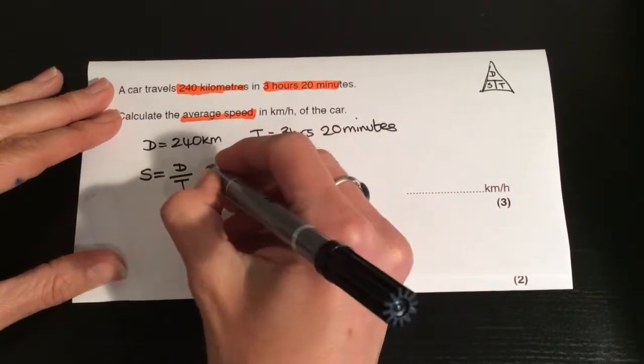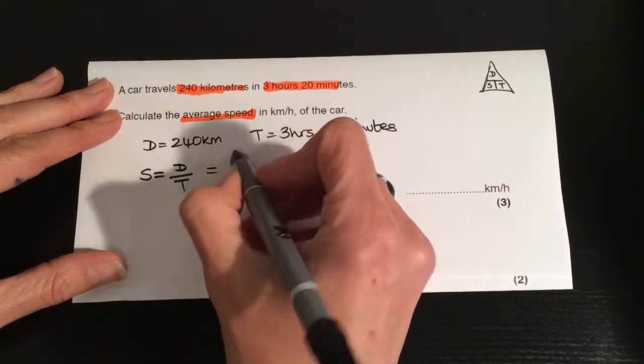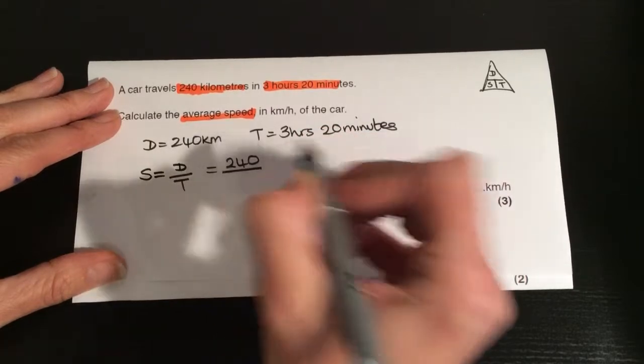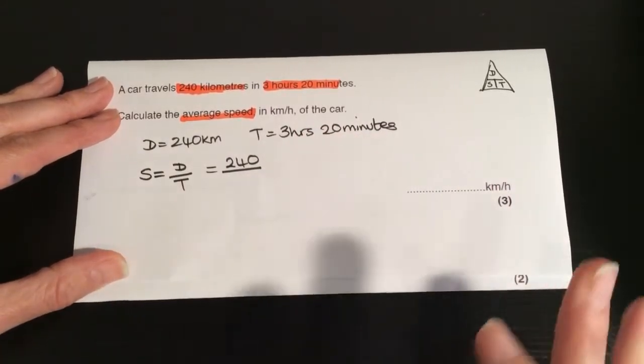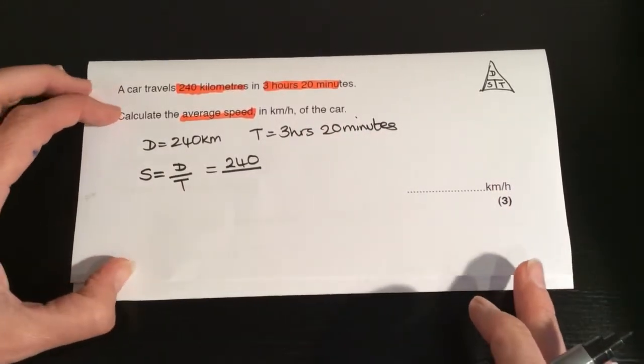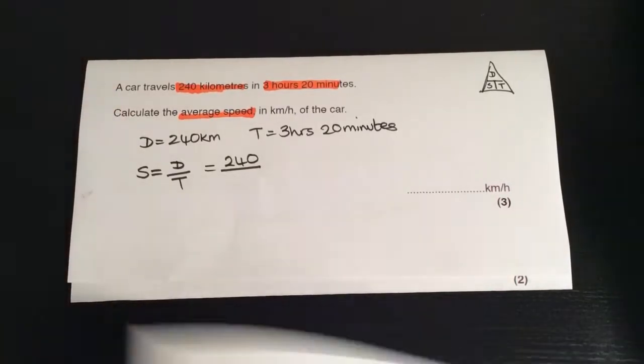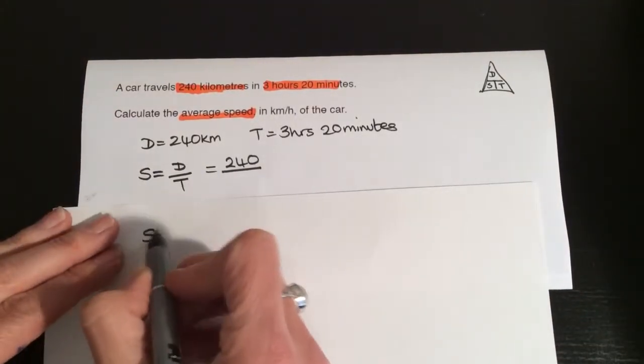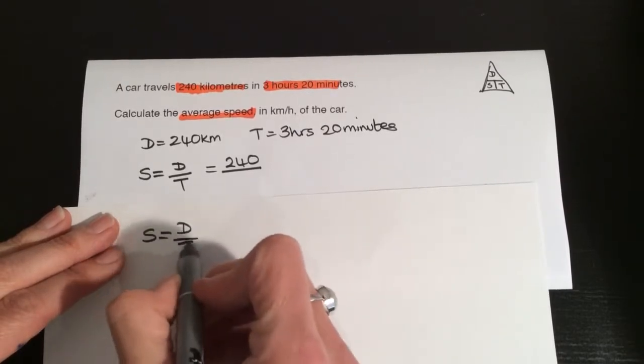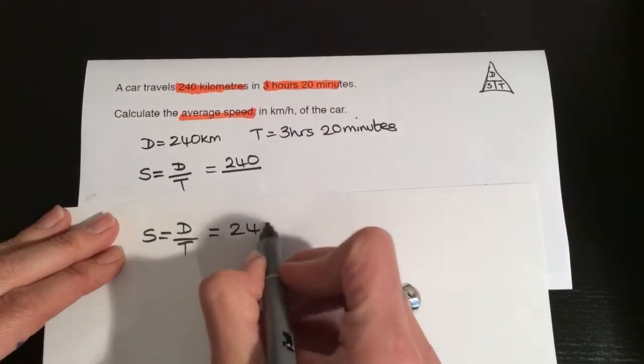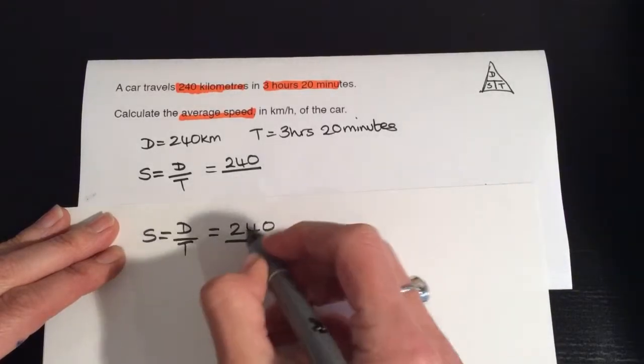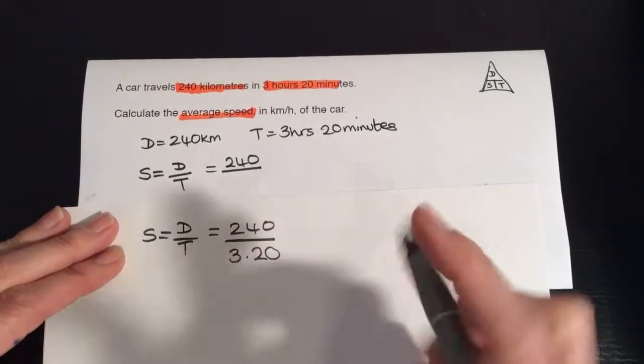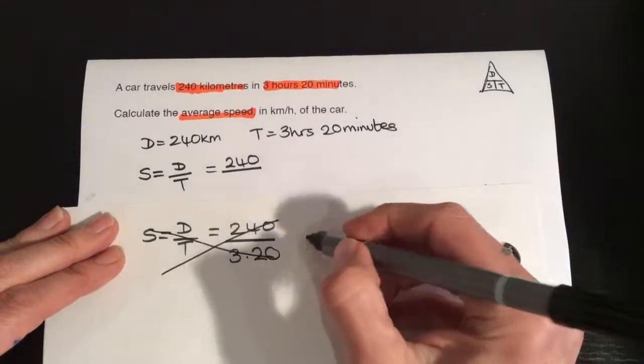Now if we start to put this in, distance is 240. Now this is where some pupils fall down. Let me show you what they do. They try to do speed is distance over time, 240 divided by 3.20, which is completely wrong.